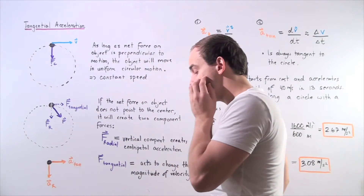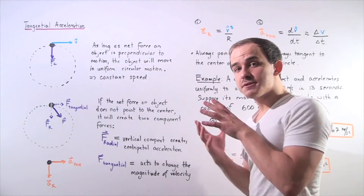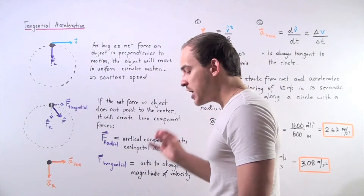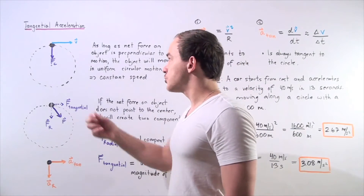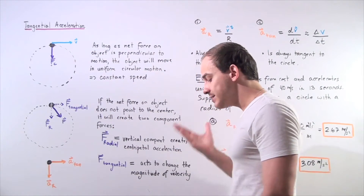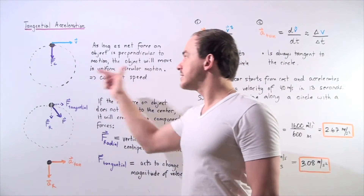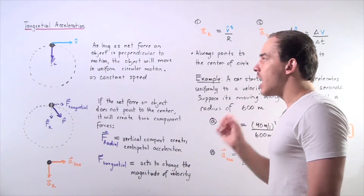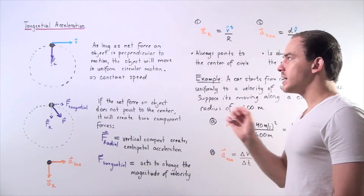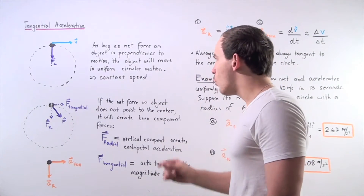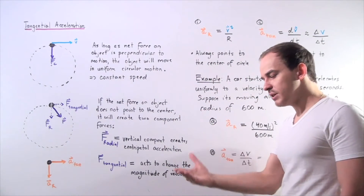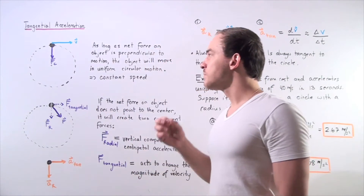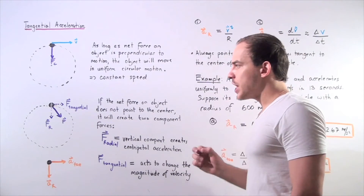What that basically means is the magnitude of velocity — the speed of the object — will remain constant, but the direction of velocity will change. And because the direction continually changes, our object is said to be accelerating towards the center of our circle. As long as the net force on the object is perpendicular to the motion of that object, the object will move in uniform circular motion, so the speed will remain constant but the direction of velocity will change.